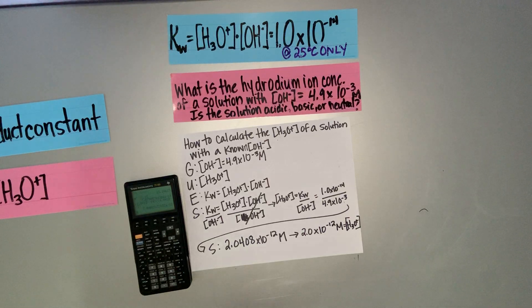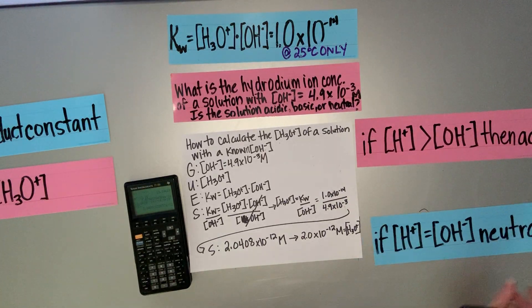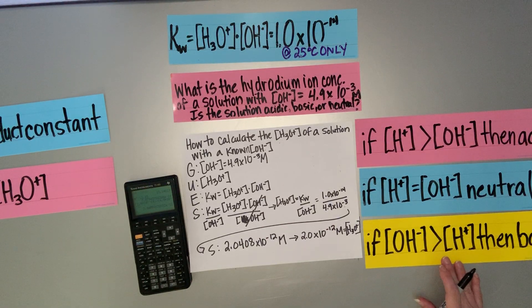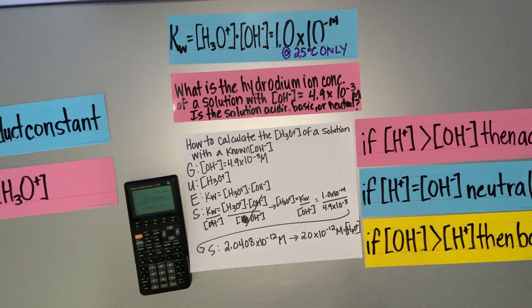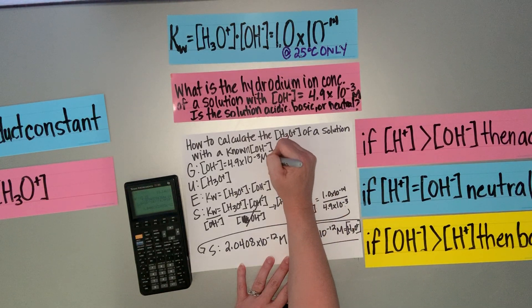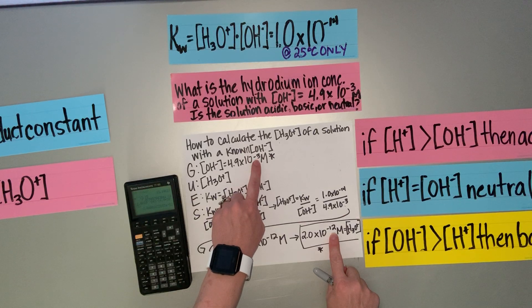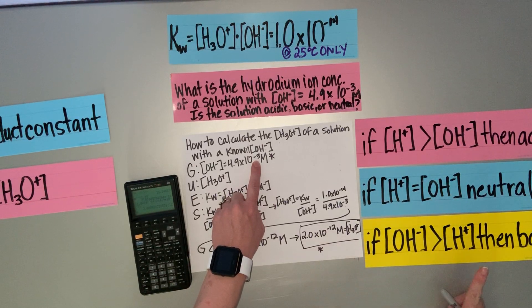The next part: is the solution acidic, basic, or neutral? If the hydrogen ion concentration is greater than the hydroxide ion concentration, the solution is acidic. If they're equal, it's neutral. If the hydroxide ion concentration is greater, it's a base. Looking at my two values, a negative 3 exponent is larger than a negative 12, so the hydroxide ion concentration is greater, meaning this solution is basic.